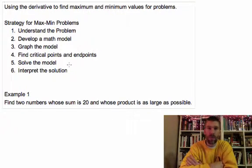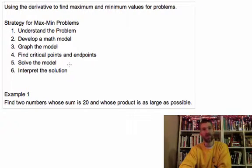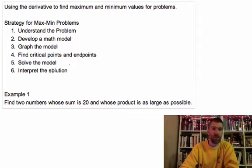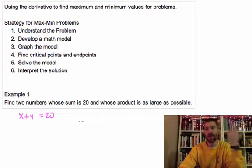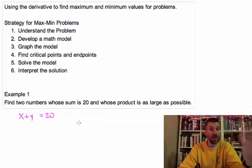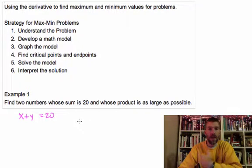So let's dive in with a simple problem here. Find two numbers whose sum is 20 and whose product is as large as possible. If we're going to find two numbers whose sum is 20 and whose product is as large as possible, we're going to say x plus y is going to be equal to 20. The problem is, we can't really take a derivative of two separate things. We want one specific deal.